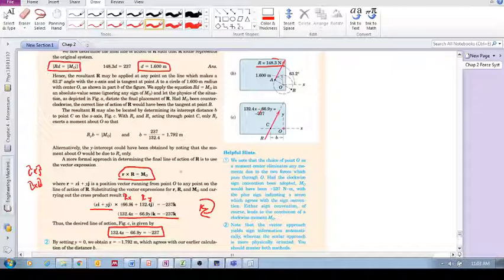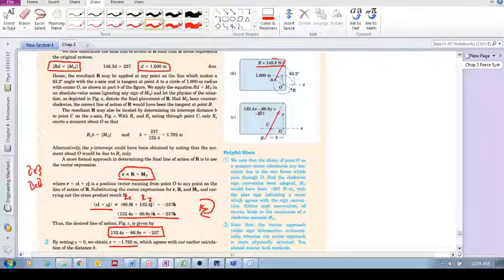Remember, O is the origin. That means that if I say, okay, where on the x-axis can I apply it? Then I make y equal to 0 and I solve for x and I get minus 1.792. So I can apply the force R at that point.